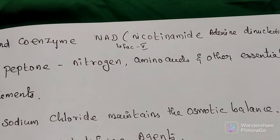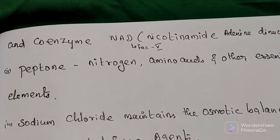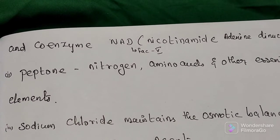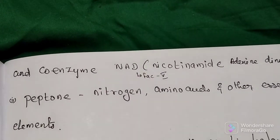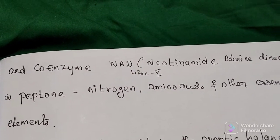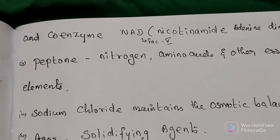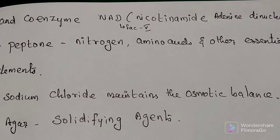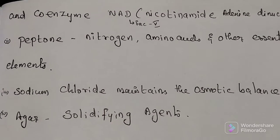So here chocolate agar medium we are using heated blood that contains factor X and V. Then peptone provides nitrogen source, amino acids, and other essential elements. Sodium chloride maintains osmotic balance. Agar acts as a solidifying agent.